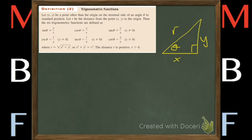What do I do if they give me a point and they ask me for the six trigonometric functions? Oh, here's what we do. First we need a point. What's your point?